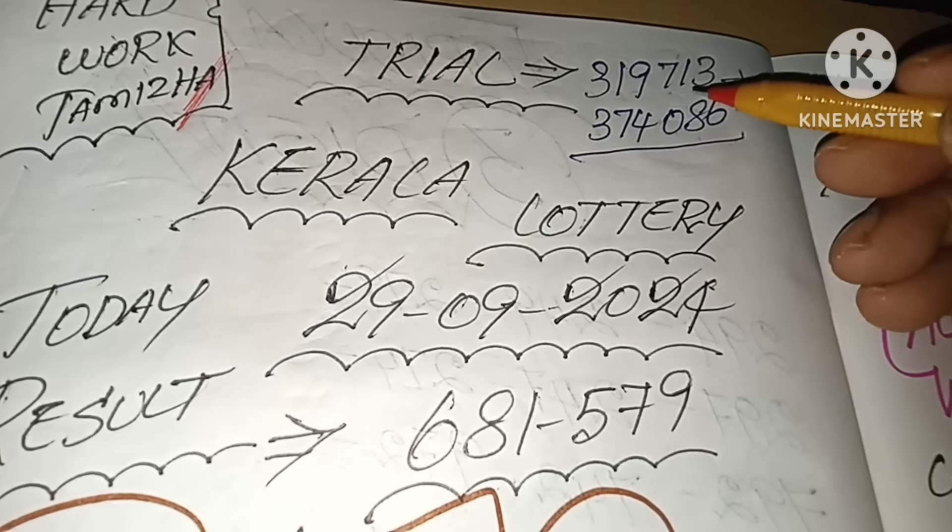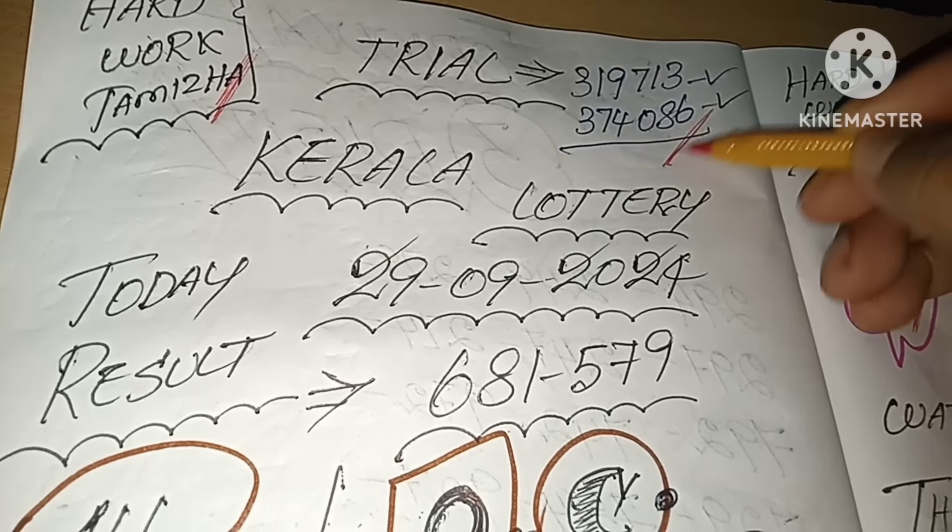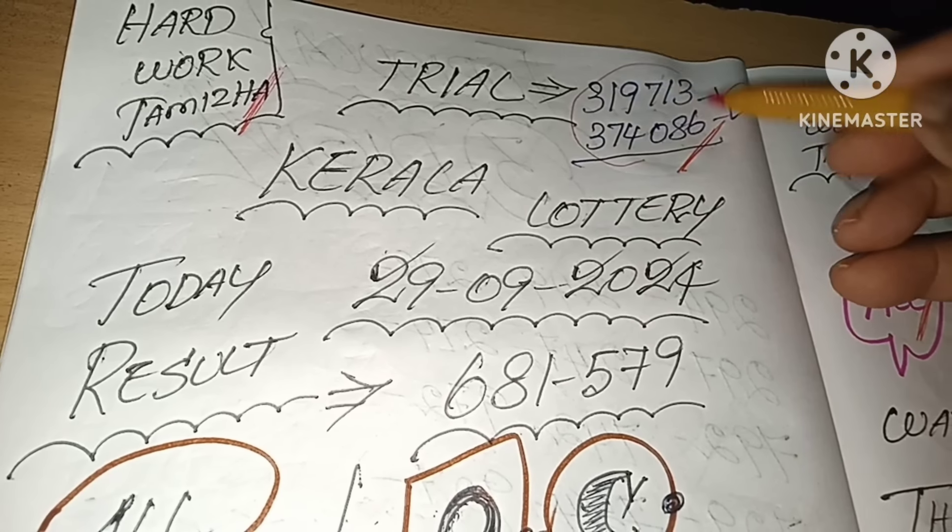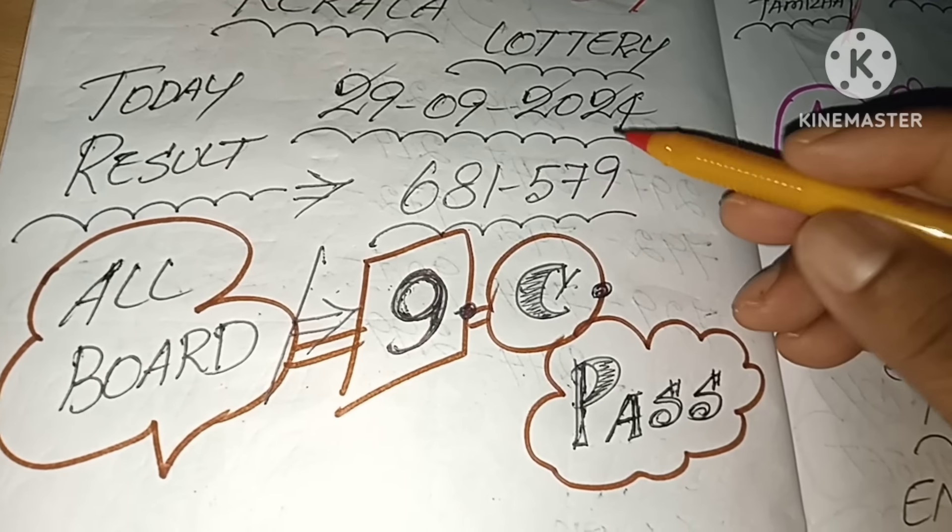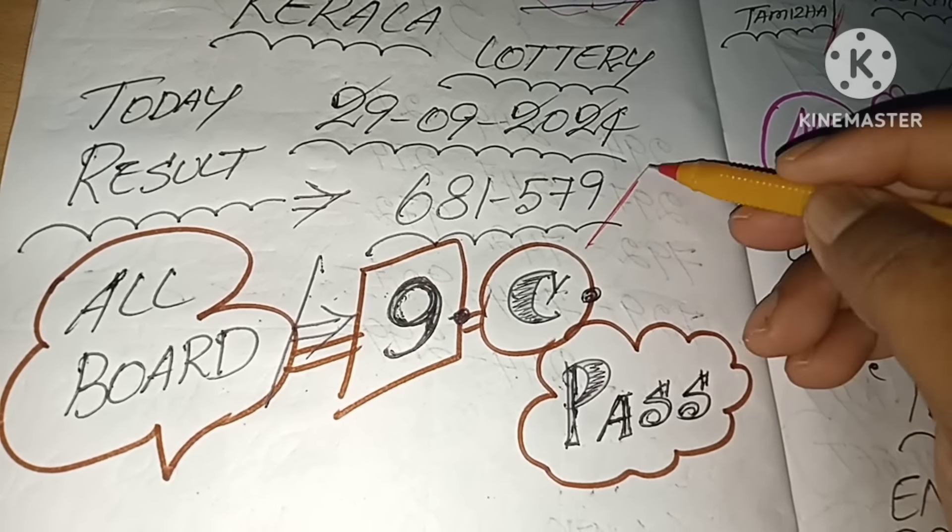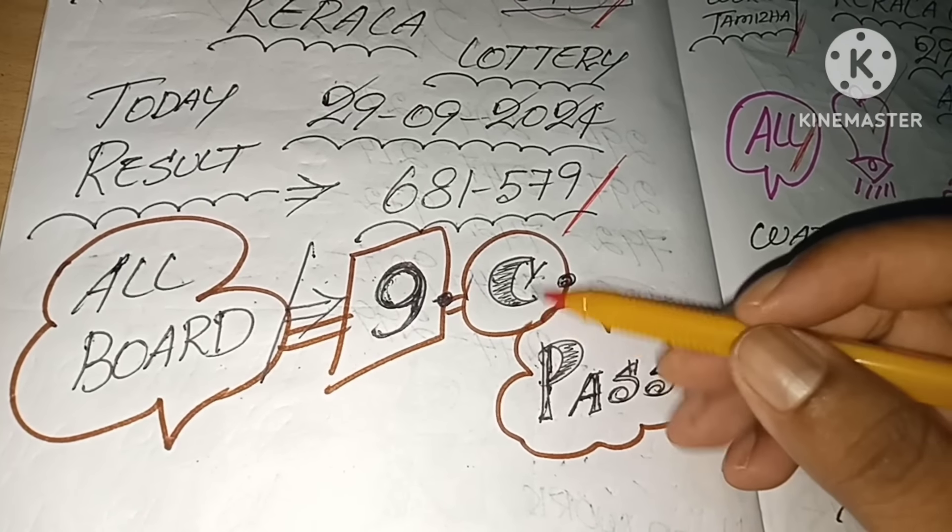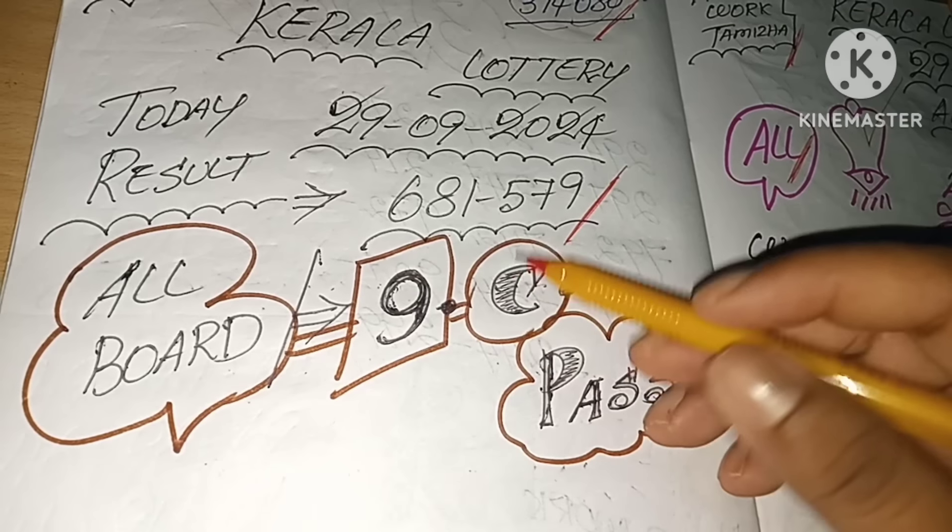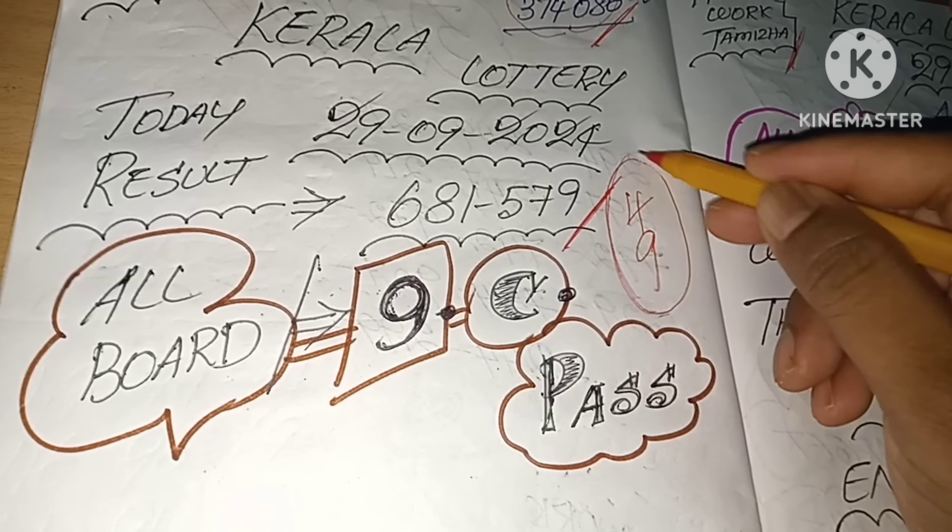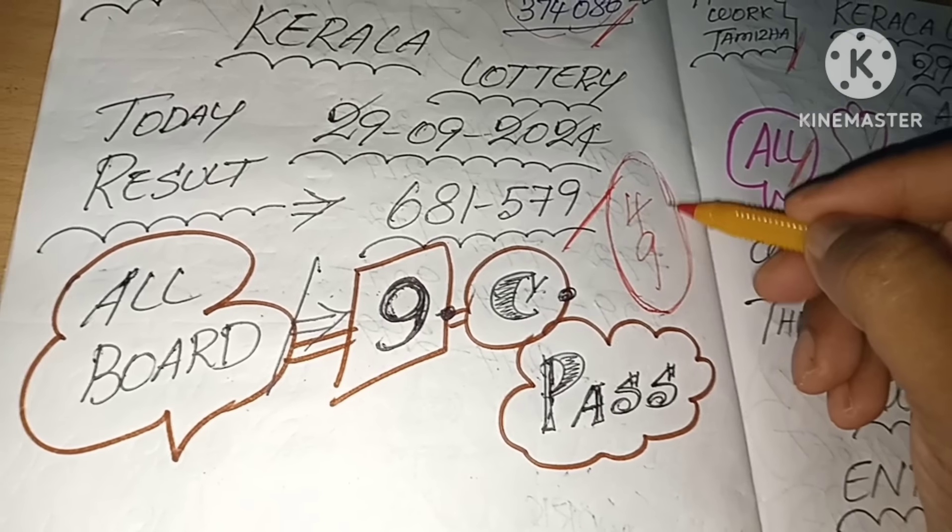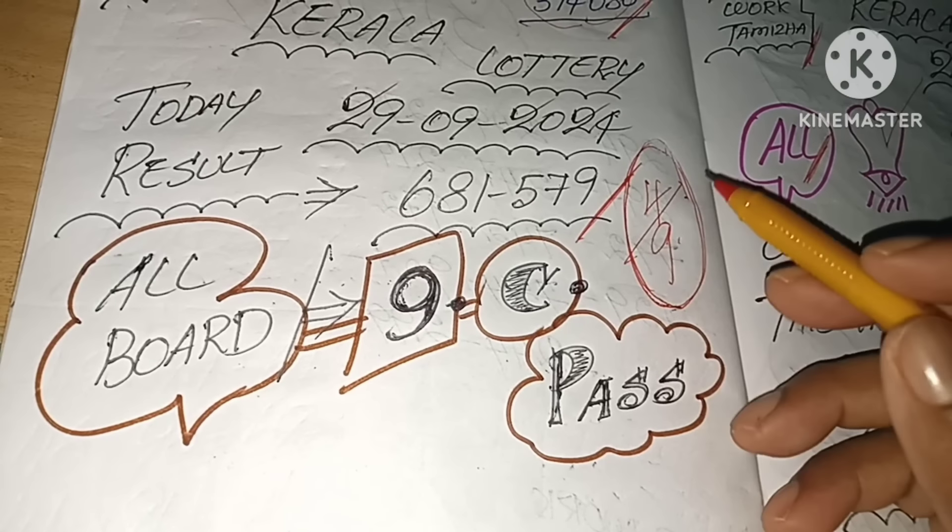The first trail number is 310 and 710. The third trail number is 310 and 710. The next video is 610 and 710. The third trail number is 910 and 410.